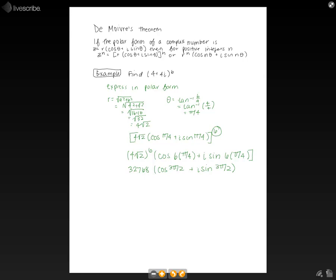So now we can solve cosine 3 pi over 2, which is equal to 0, and i sine 3 pi over 2, so sine 3 pi over 2 is equal to 1. So now we will have 32,768 times (0 minus 1i). So then you distribute the 32,768 to get negative 32,768i.